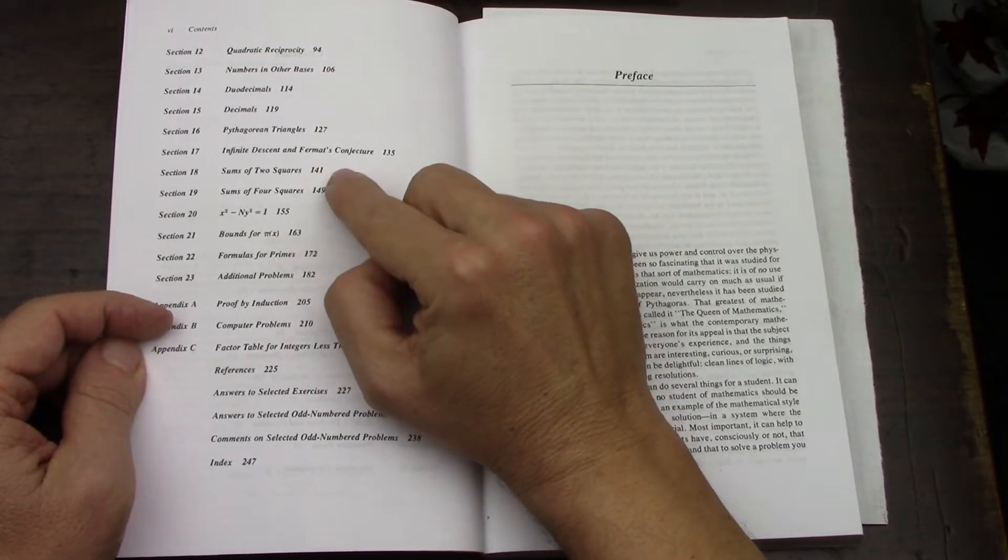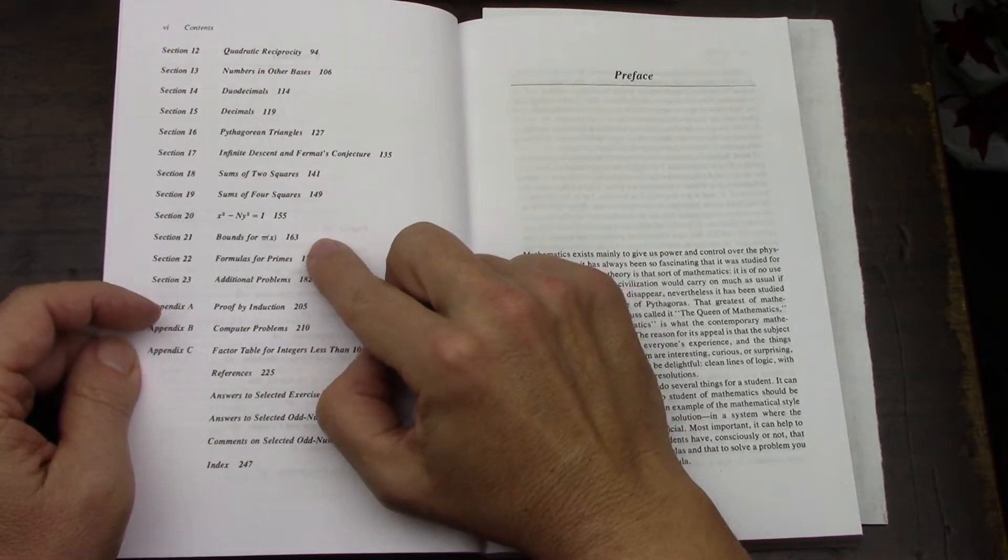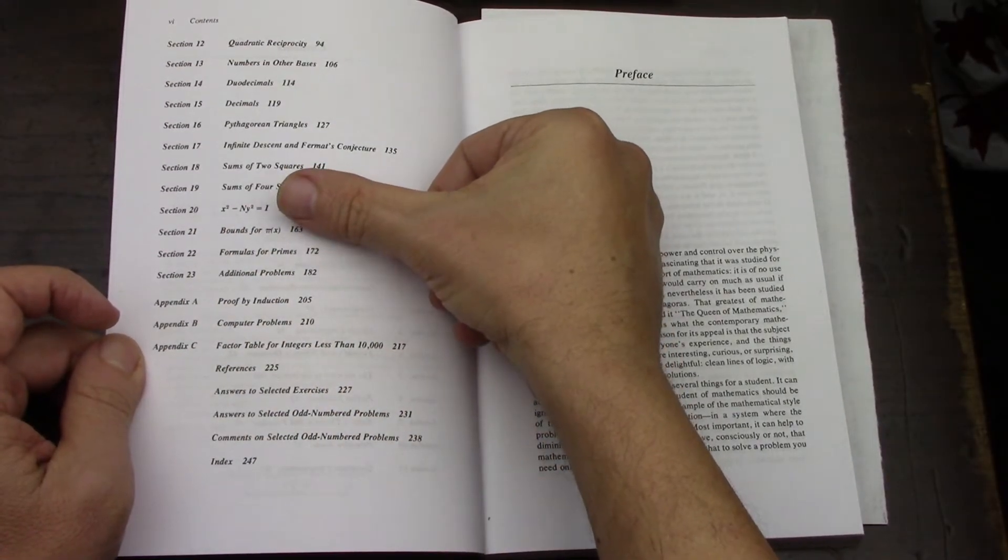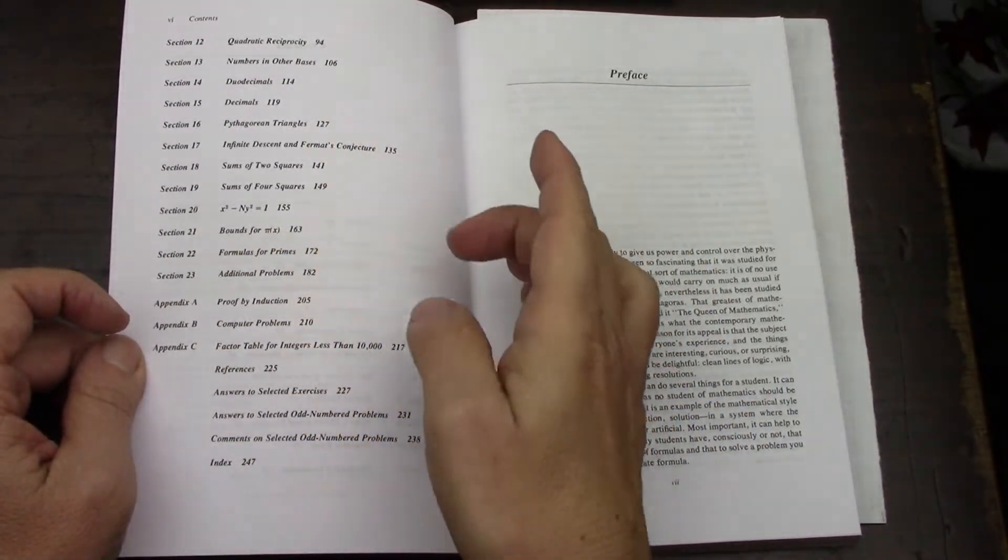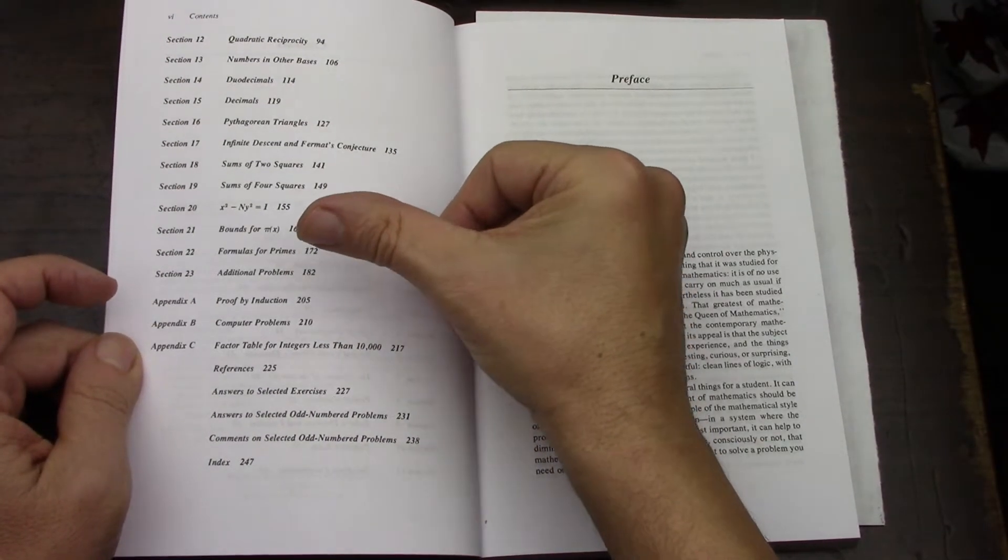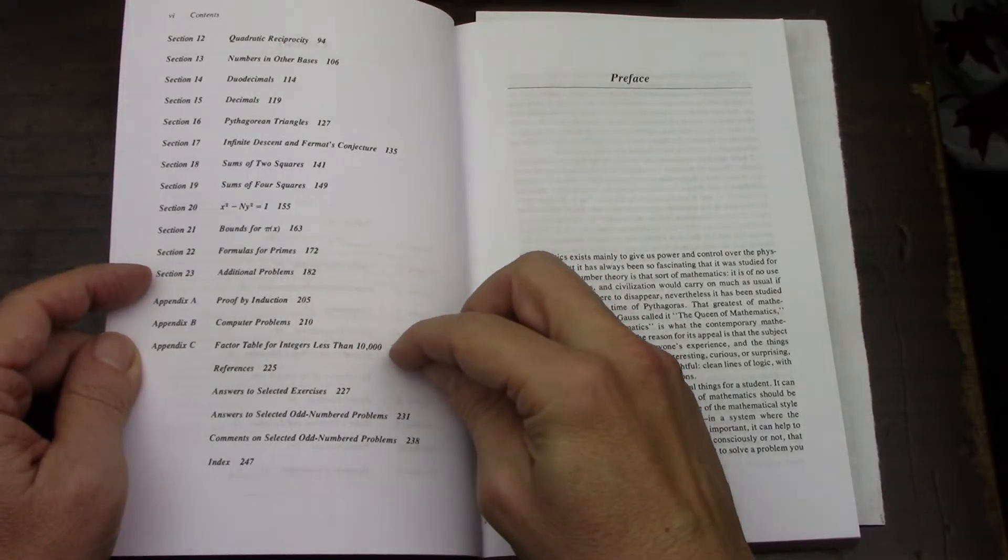I see things that I haven't done, as a matter of fact. Sums of two squares, four squares, a specific Diophantine Equation, Bounds for Pi of X. I think this has to do with the Inclusion-Exclusion Theorem, if I remember correctly. Formulas for Primes, Additional Problems. It's got some nice appendices.